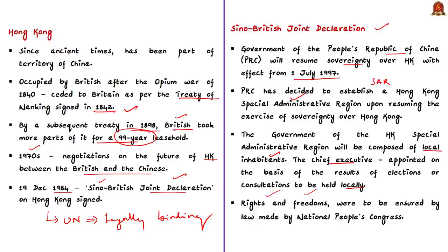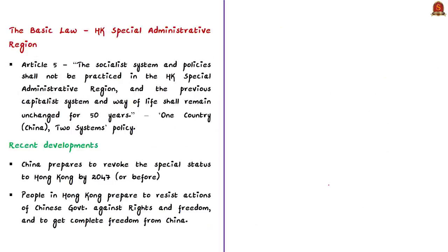The Basic Law was to be enacted by the National People's Congress of the PRC. The NPC adopted the Basic Law of the Hong Kong Special Administrative Region in 1990, promulgated by the president of China on the day of adoption, and it became effective on 1st July 1997. The National People's Congress along with its standing committee exercises the legislative power in China. Article 5 of the Basic Law mentions that the socialist system and policies shall not be practiced in the Hong Kong SAR.